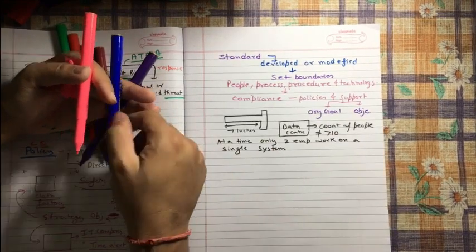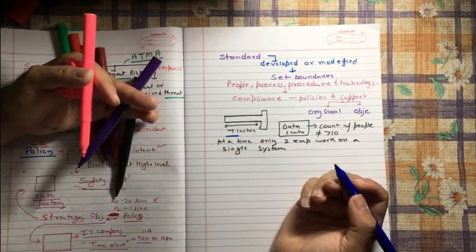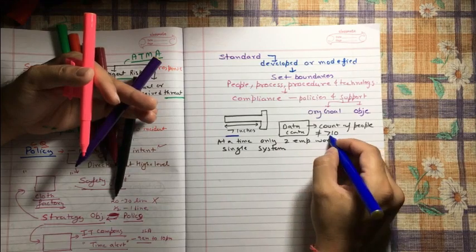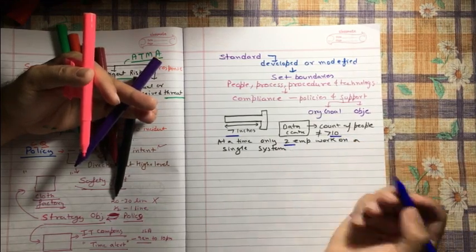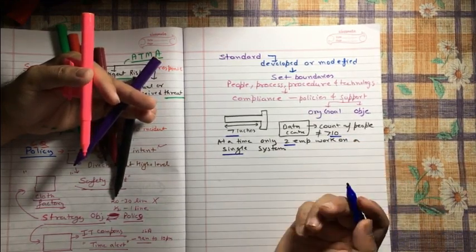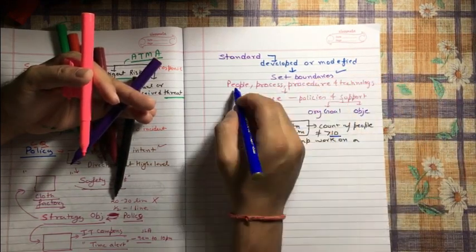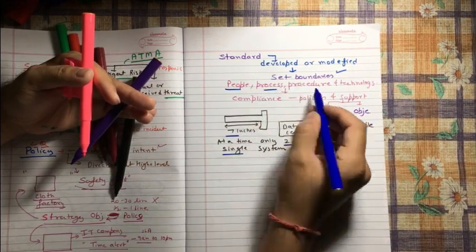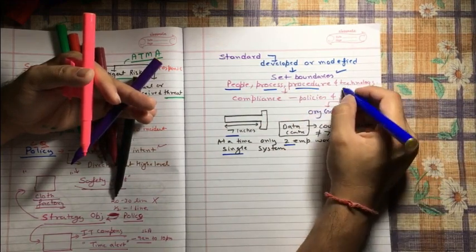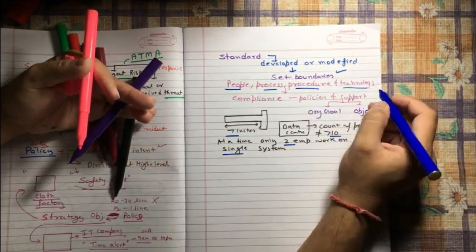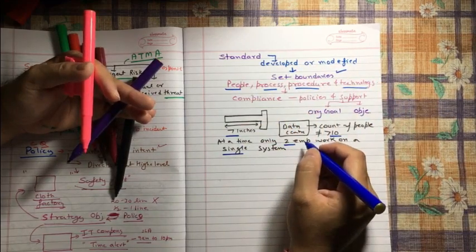So you know what? I am setting boundaries: seven inches, 10 people, two employees, single systems. So here I am setting certain boundaries on people, process, any procedure or some technologies. So these things come under our standards.